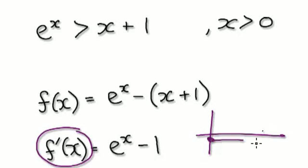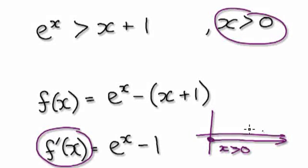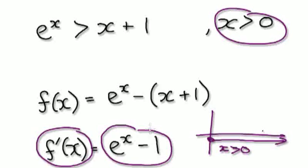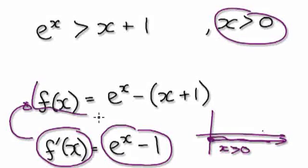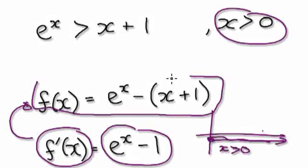Our region being this — x being greater than zero. So within our region, we realized that the derivative will always be greater than one. Now, if the derivative is always greater than one within our region, that would imply that the original function must always be climbing.